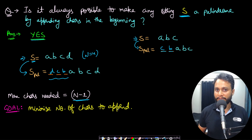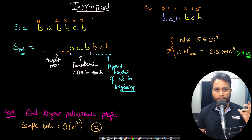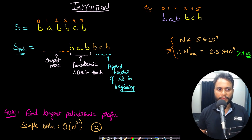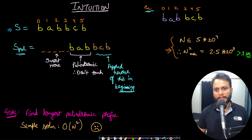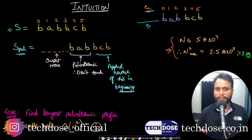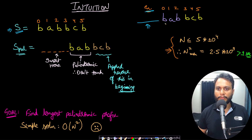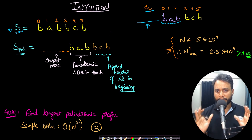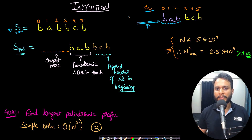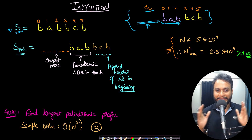This is a bit challenging. Let's build some intuition. If our string s is 'babbcb' and we want to convert it to a palindrome by appending characters in the beginning, the original string s will end up somewhere in the middle. To minimize the number of appended characters, I want the prefix of s to already be a palindrome — and I want to maximize that prefix length.